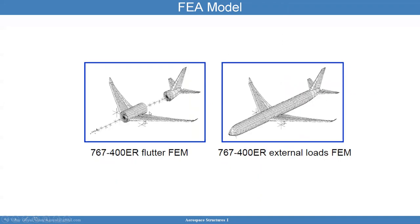A finite element model can include a reduction of the fuselage into a center line, so that the center line is carrying the loads. This model is for flutter, for dynamics. This other model is for external loads and finite elements, but you can reduce the model into simple beams. These beams carry the mass and include everything else. So for more advanced modeling, reducing the structure can be very useful.